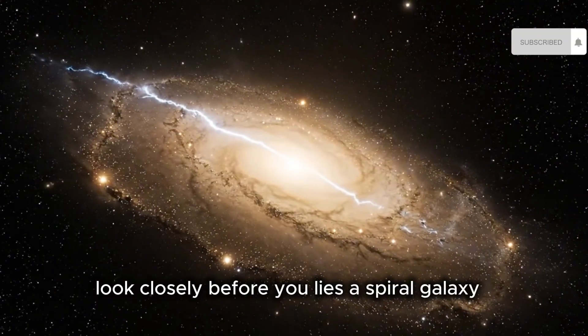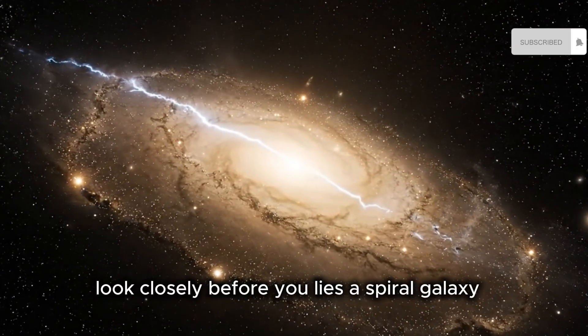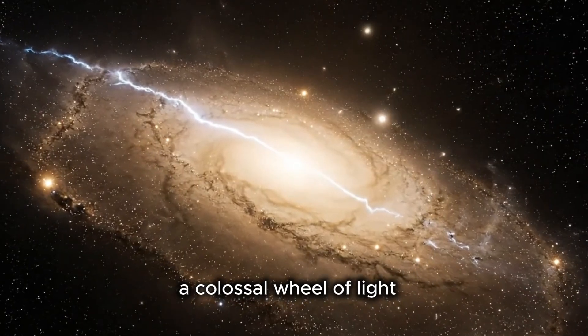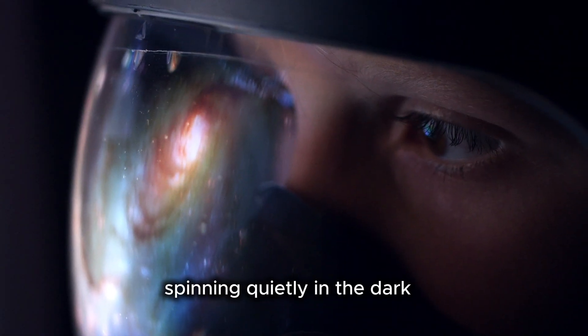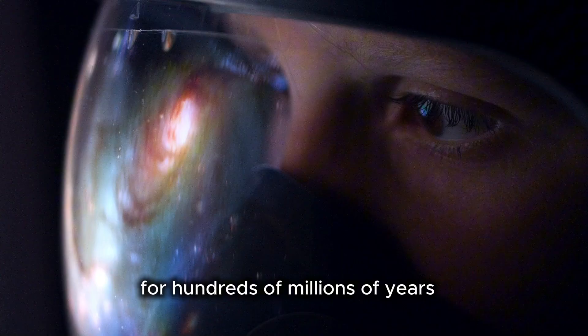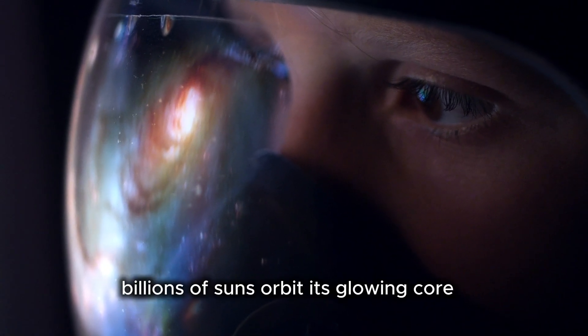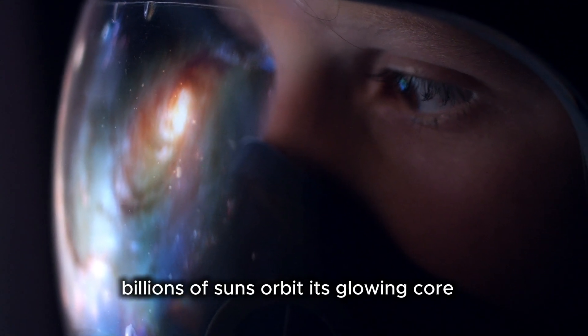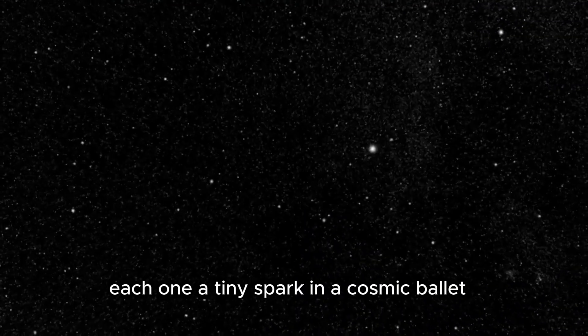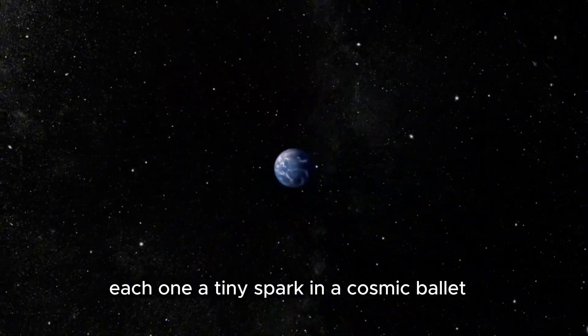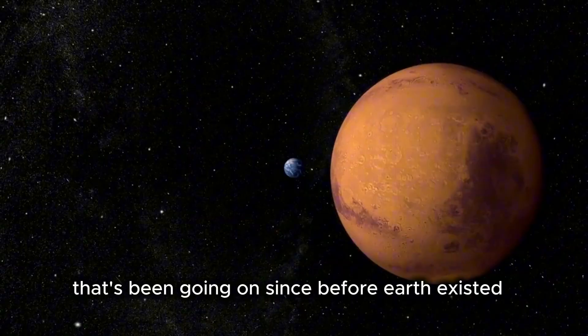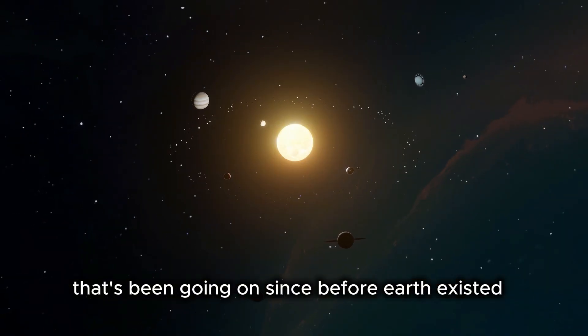Look closely. Before you lies a spiral galaxy, a colossal wheel of light, spinning quietly in the dark for hundreds of millions of years. Billions of suns orbit its glowing core, each one a tiny spark in a cosmic ballet that's been going on since before Earth existed.